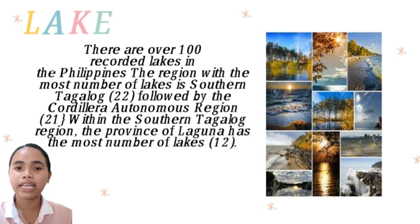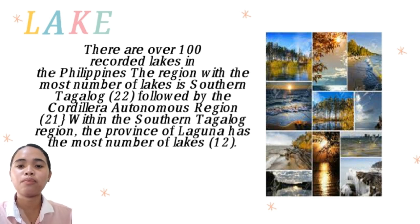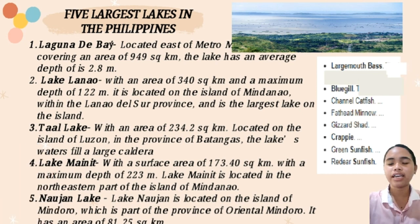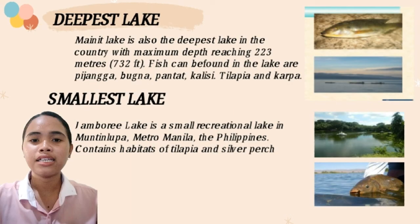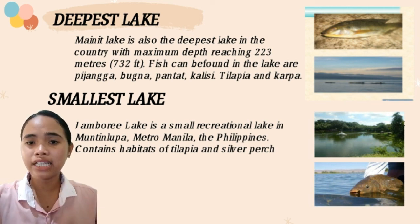There are over 100 recorded lakes in the Philippines. The region with the most lakes is Southern Tagalog with 22, followed by the Cordillera Administrative Region. Within Southern Tagalog, the province of Laguna has the most lakes, with 12. The five largest lakes are Laguna de Bay, Lake Lanao, Taal Lake, Lake Mainit, and Lake Buhi. Fish species found in Lake Mainit include Pijanga, Bunog, Pantat, Calisi, Tilapia, and Carpa.